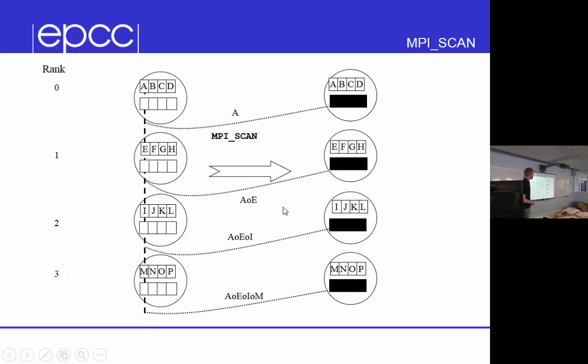So the scan is a prefix reduction. So what a scan does is it does a reduction on the processes up until that point. So for instance, calling scan on process 0, it just puts A here. On process 1, it does A, operator E. On process 2, it does A, operator E, operator I. On process 3, it does A, operator E, operator I, operator M, and writes it in. So it just does the reduction based upon the data on the processes up until that process is rank.